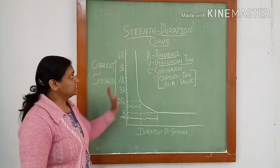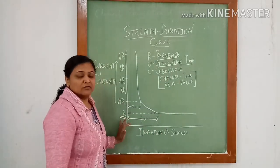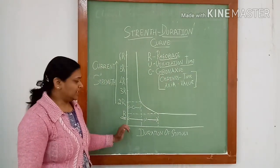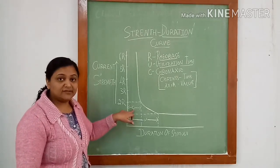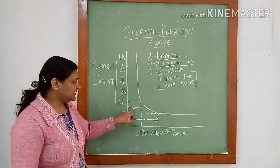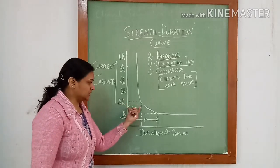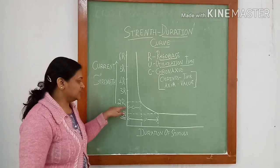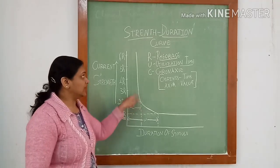Now from this strength duration curve we can know the excitability of any tissue in terms of chronaxie. So what is chronaxie? Chronaxie is the minimum duration for which a strength double the rheobase is given to produce a response.